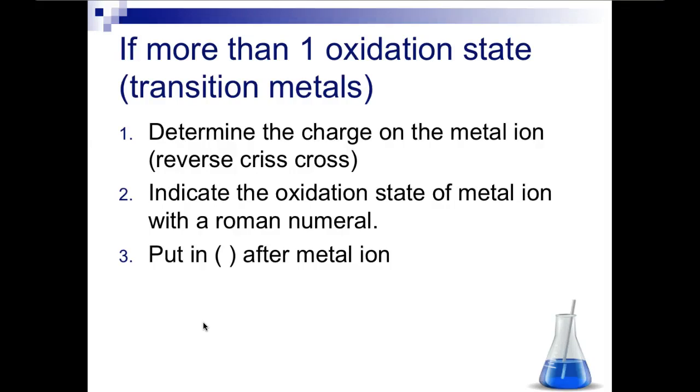First, you're going to determine what the charge on the metal ion is by doing a reverse criss-cross. Then we're going to indicate the oxidation state of that metal ion with a Roman numeral, and we're going to put that Roman numeral in parentheses after the metal ion.